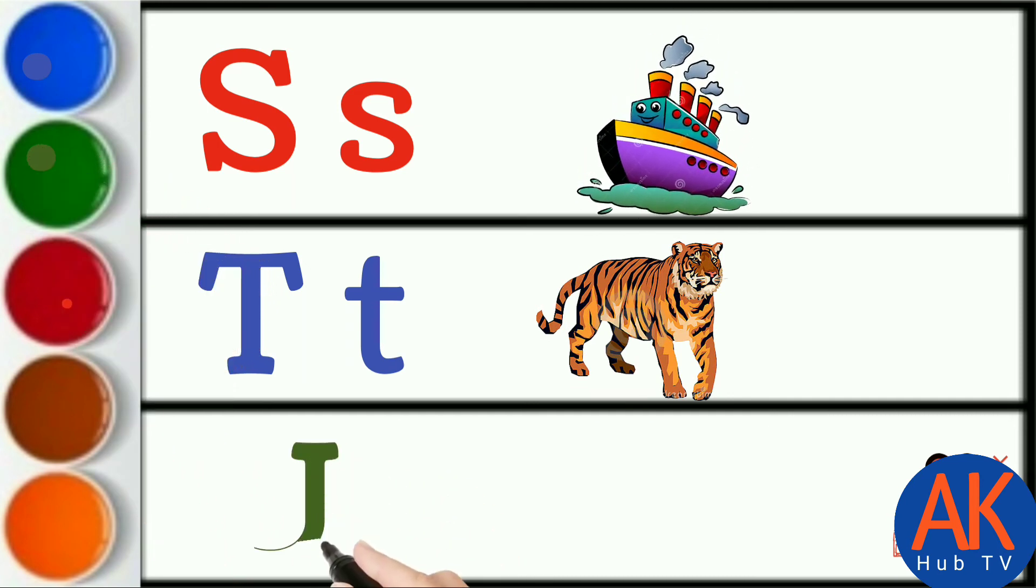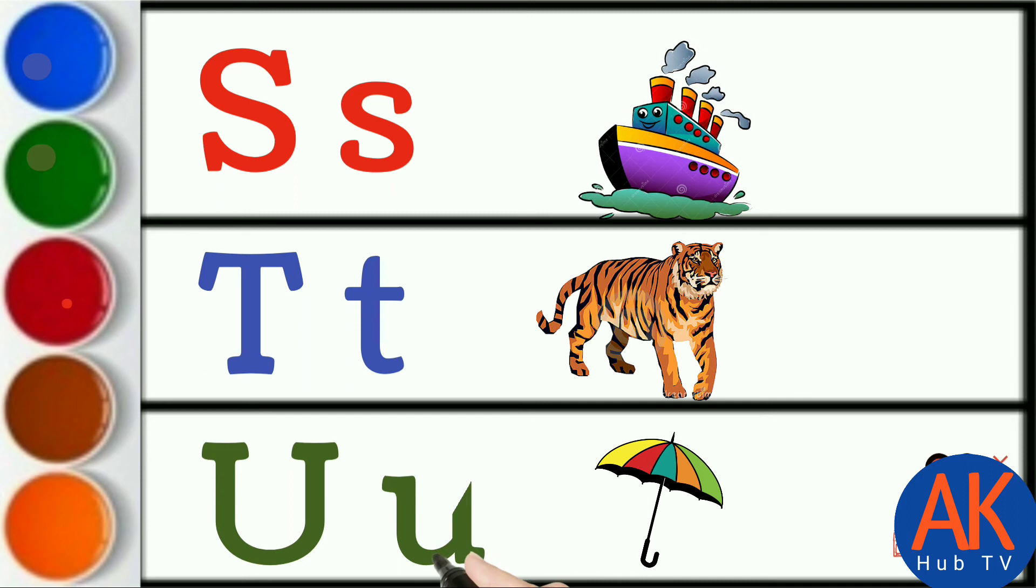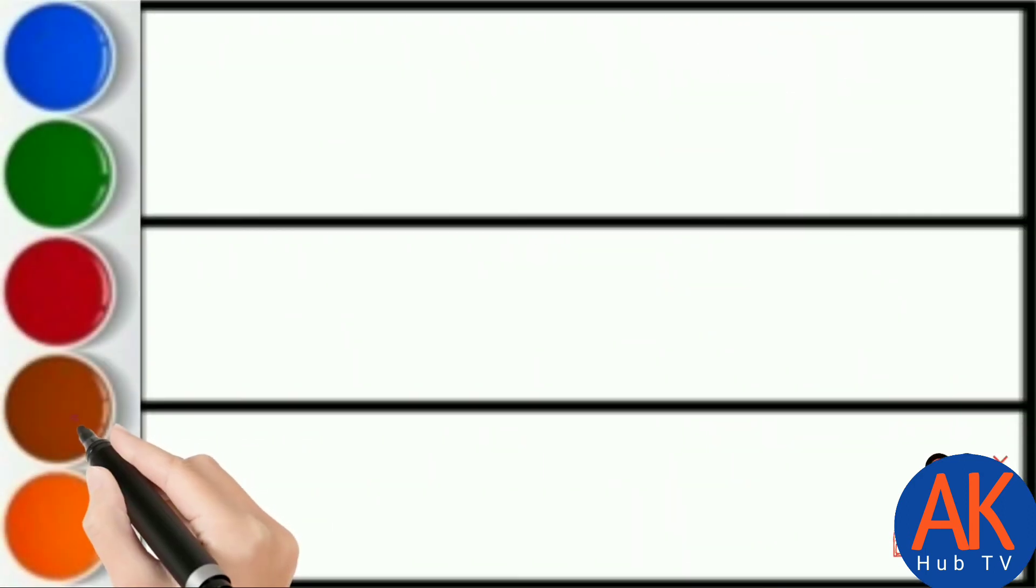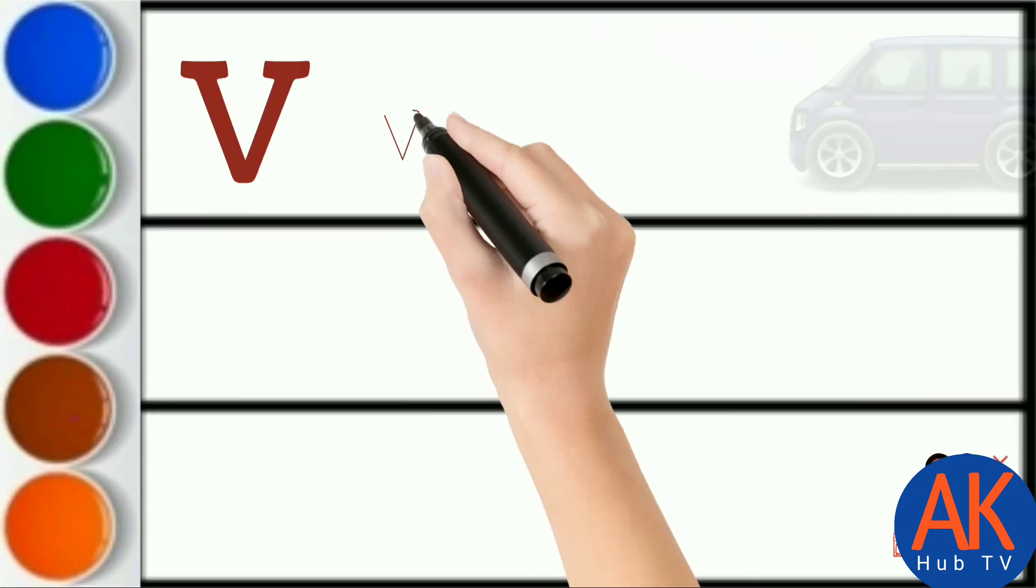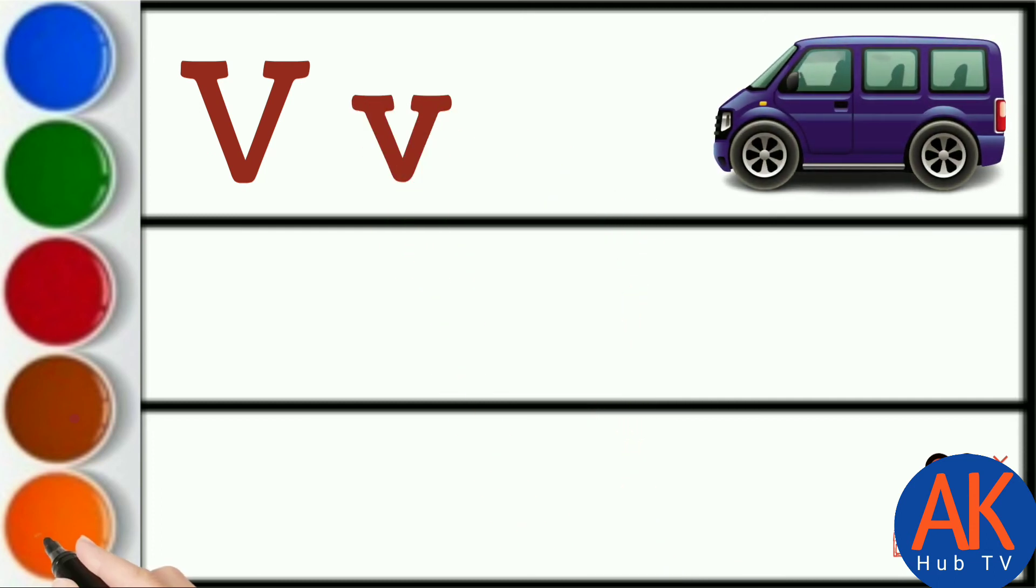Green color U. U for umbrella. Brown color V. V for van.